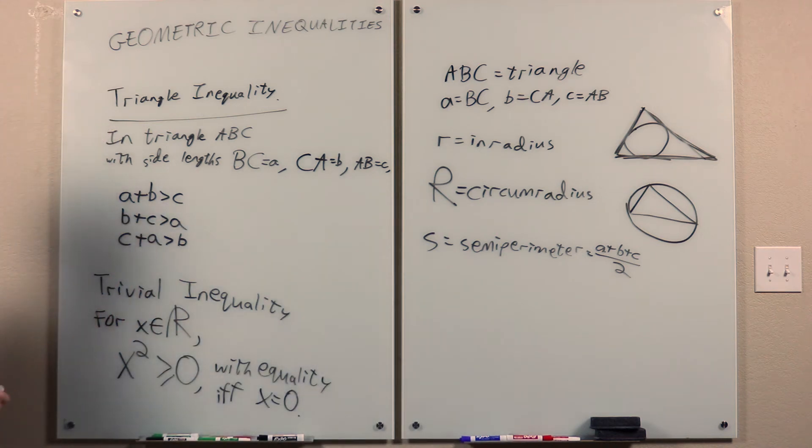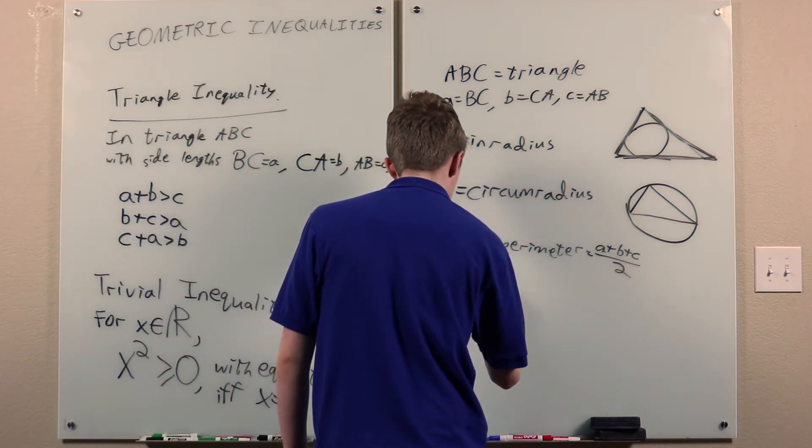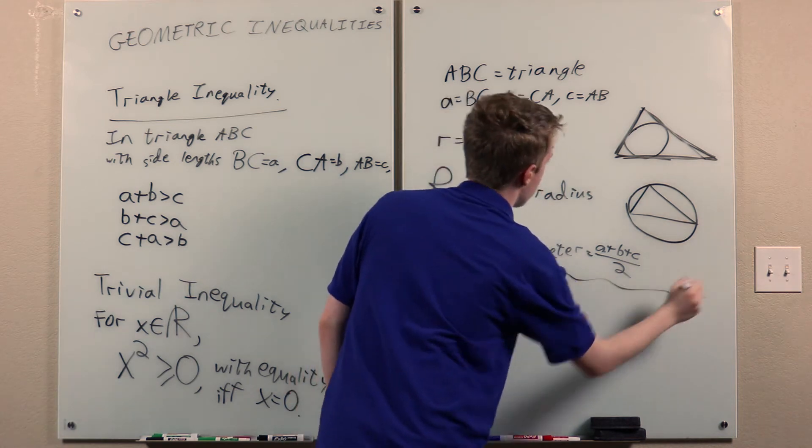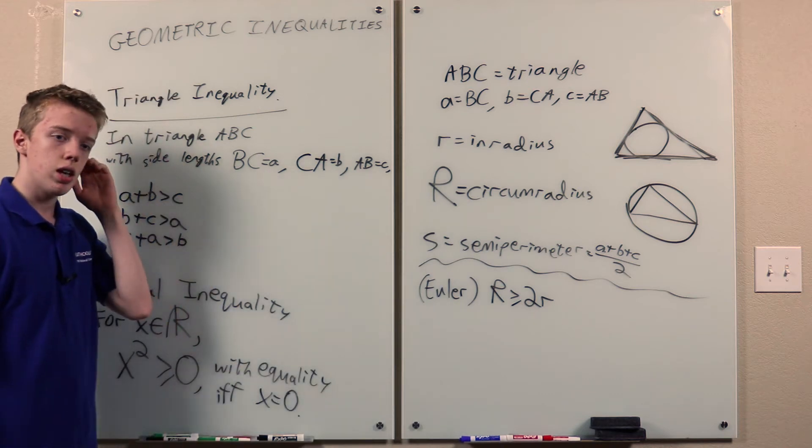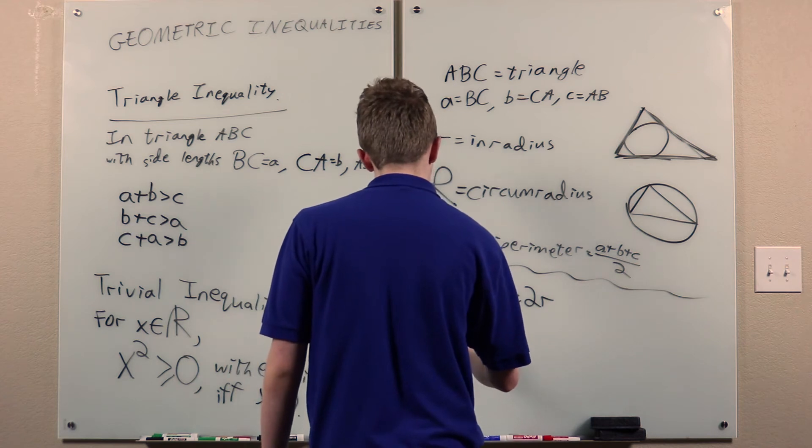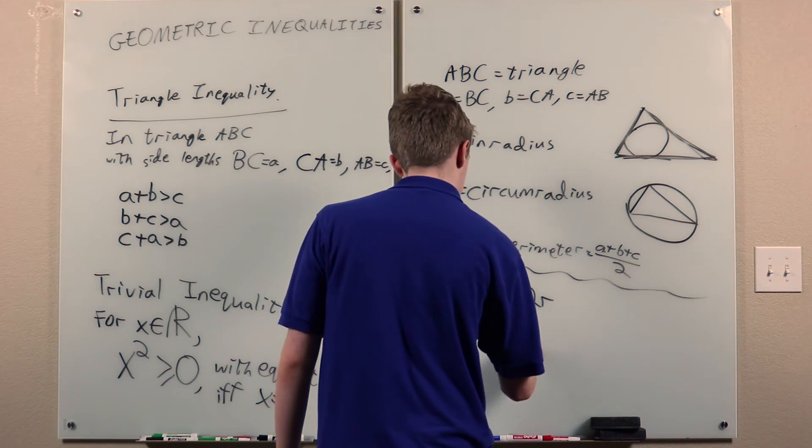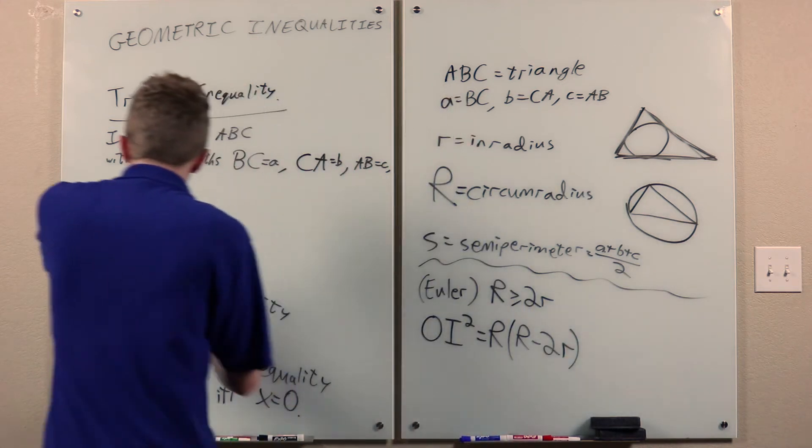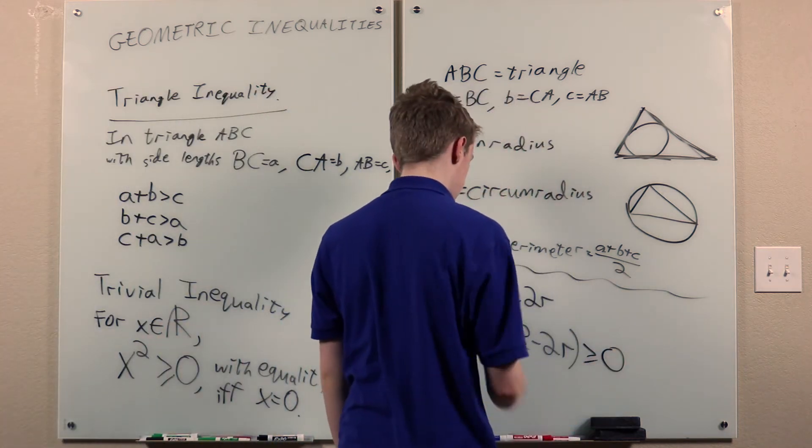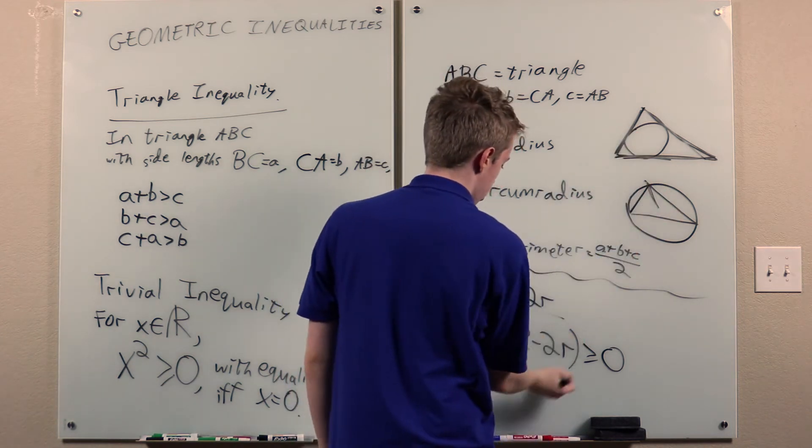Then, we have this famous inequality of Euler, which says that the circumradius is at least twice the inradius. And then the classical proof, there are other proofs, but the classical proof is to prove this, and then appeal to the trivial inequality to say that this is greater than or equal to zero. And then r is positive, since it's an actual length of something. So then this is non-negative.